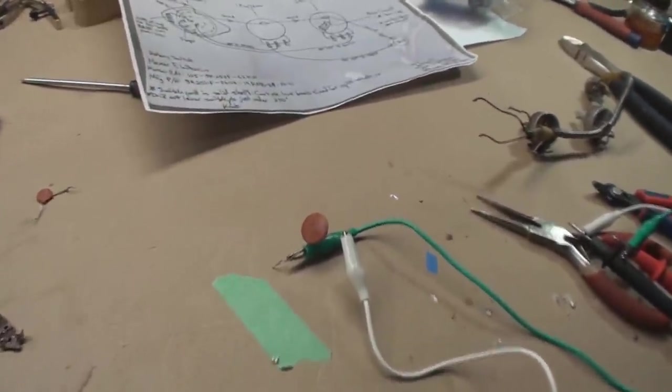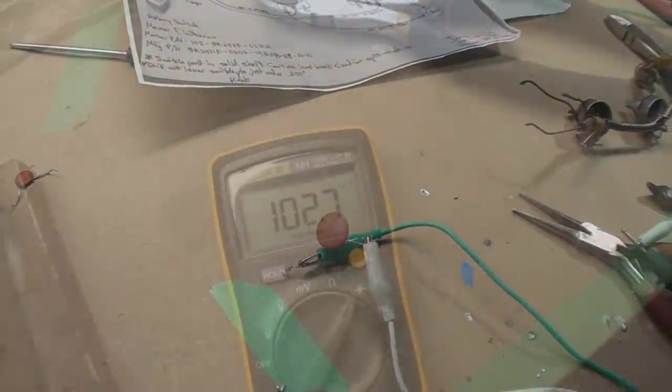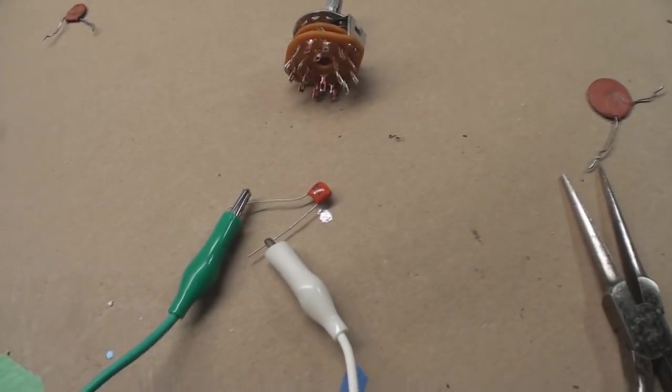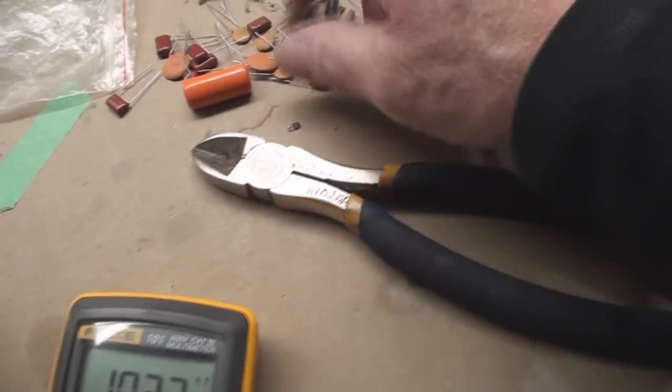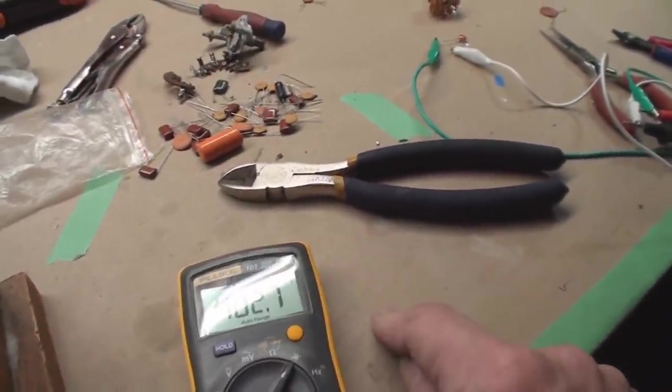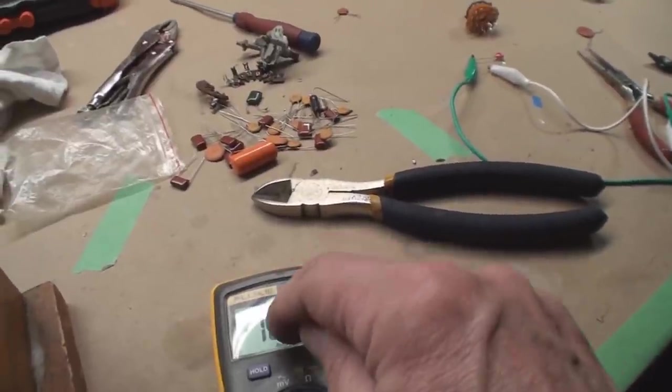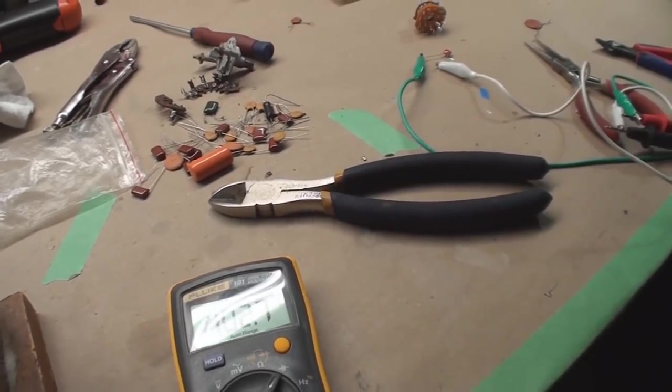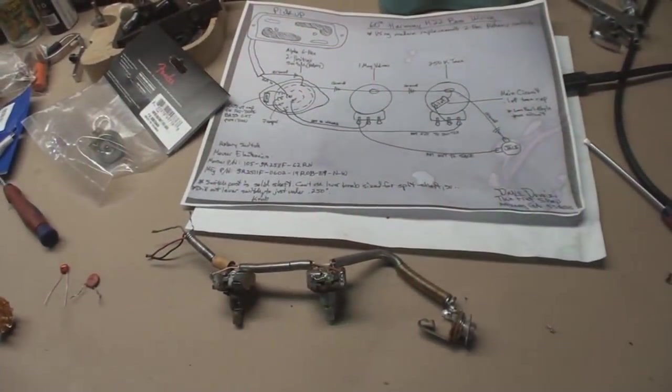Yeah folks, that capacitor ain't capacitating the way it's supposed to. I have to look through my stuff. I don't think I have one like that. Ah, look what Davey found in his stuff! I'm so happy, it's the only one. Don't wreck it. 102 nanofarads equals 0.1 microfarads.